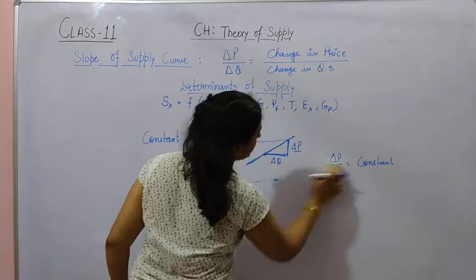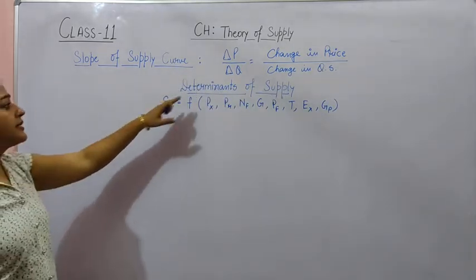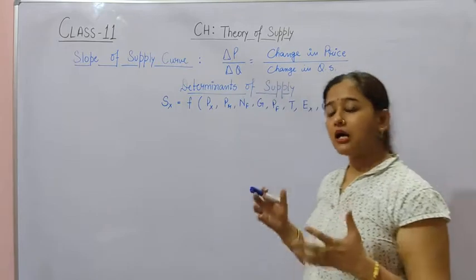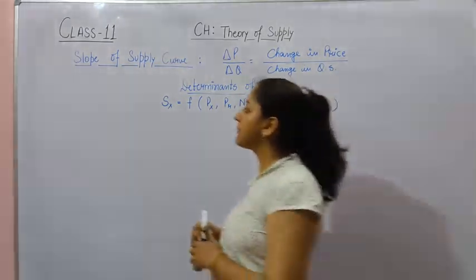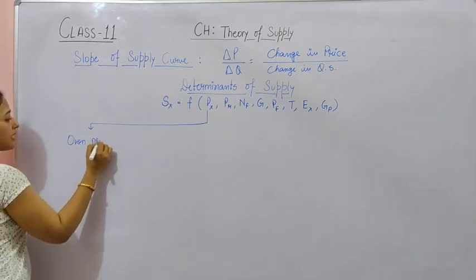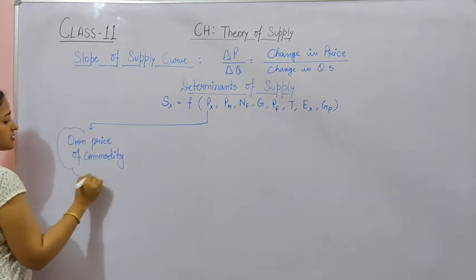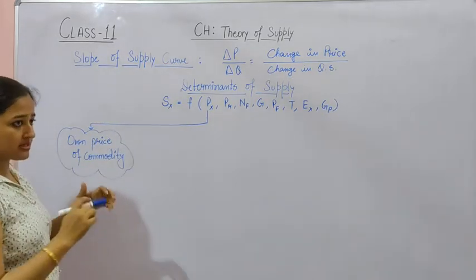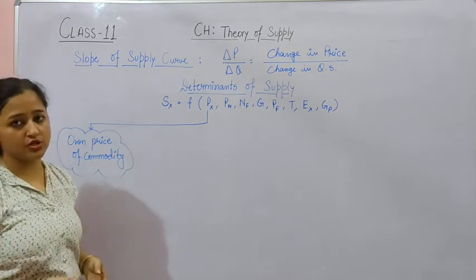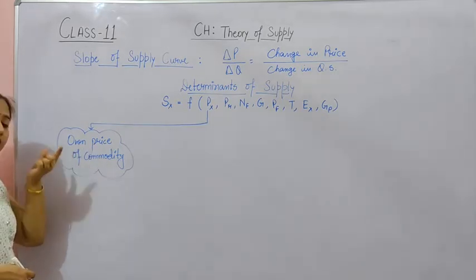So, this is our slope of supply. Next, we will talk about the determinants of supply — the factors on the basis of which supply is determined. The first determinant is Px, that is, the price of the commodity itself. If prices of the commodity increase, supply also increases, and if prices decrease, supply also decreases.